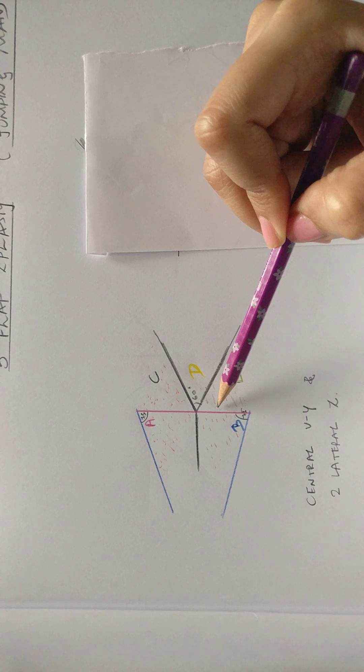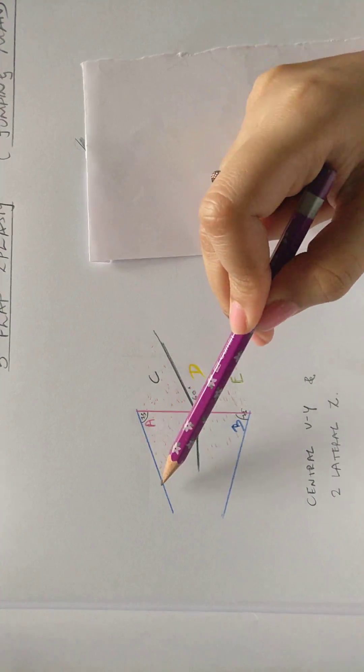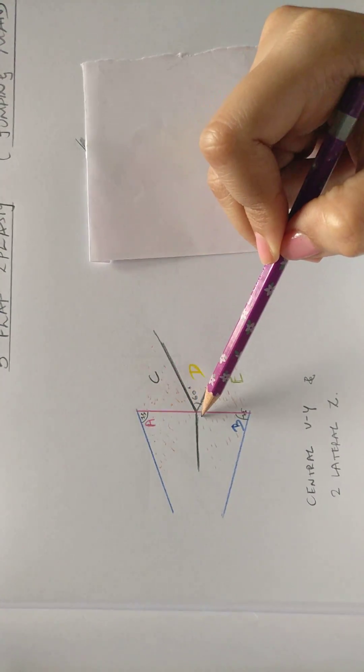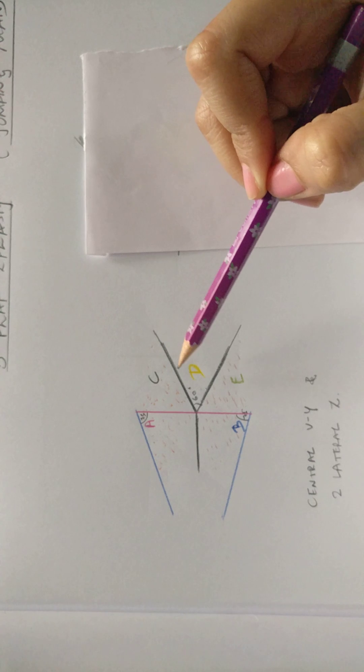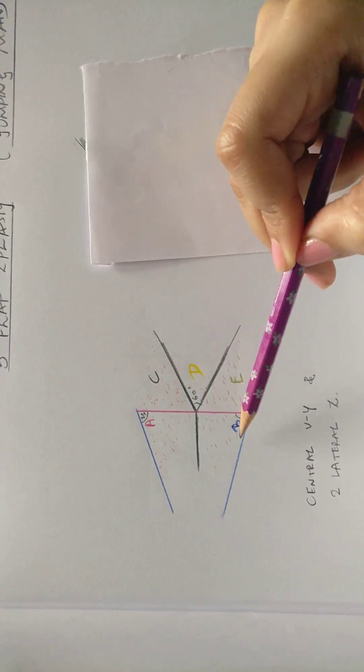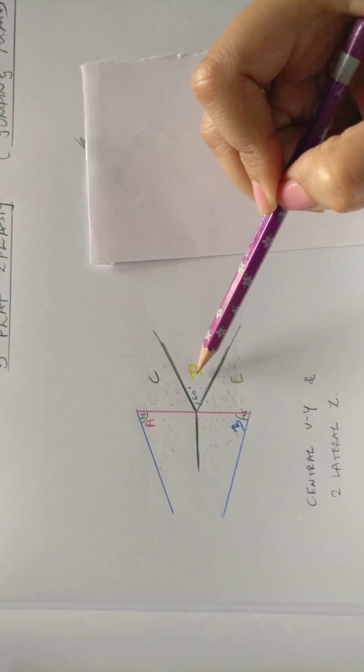Hence the two Z's that we have are formed in this manner by A and C and by B and E on either side of the central V-Y which is D.